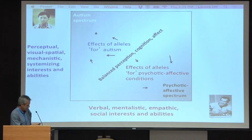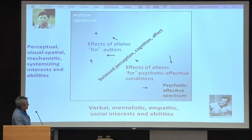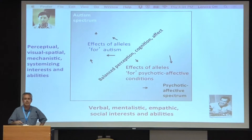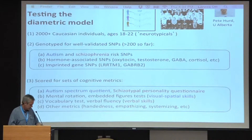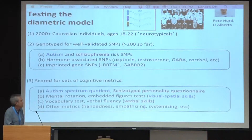One can visualize the model in two dimensions: non-social traits on the y-axis, social traits on the x-axis, with balanced perception, cognition, and affect in the middle. These vectors represent effects of alleles for different conditions — psychotic affective conditions on one end and autism spectrum conditions on the other. We are basically at the extremes of adaptation and trade-offs. We've been testing this model by collecting data from about 2,000 college students from non-clinical populations, genotyping them for relatively well-validated autism and schizophrenia risk SNPs.